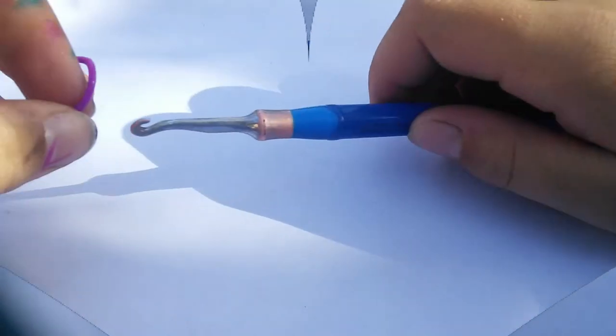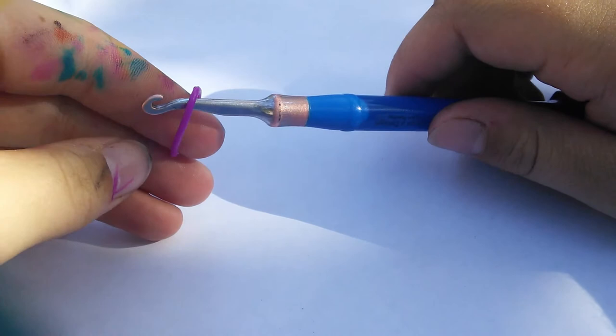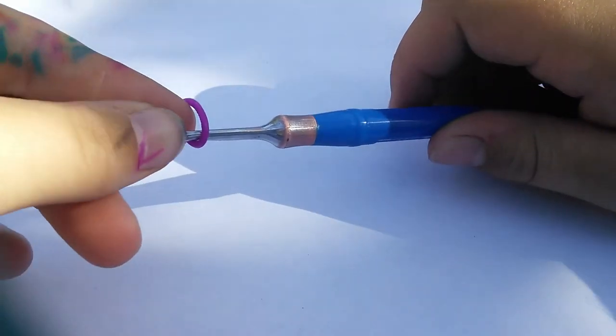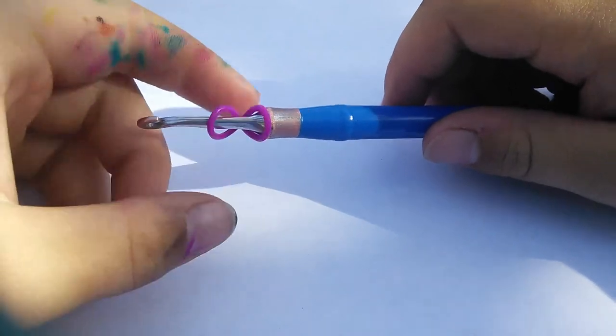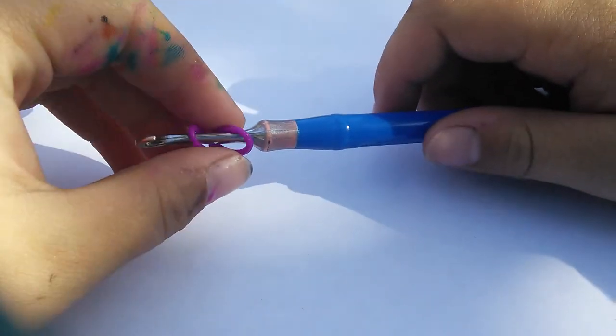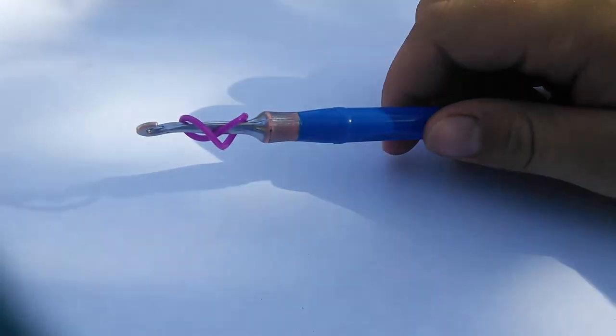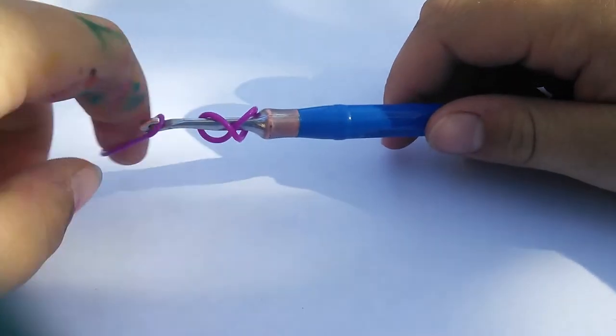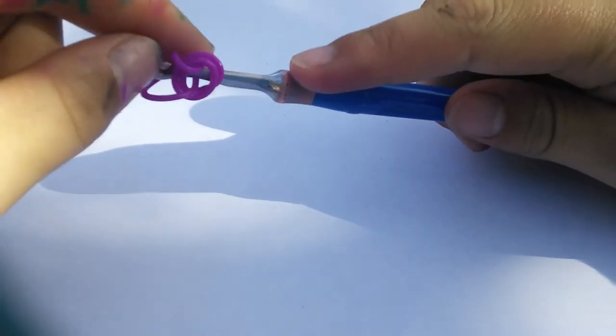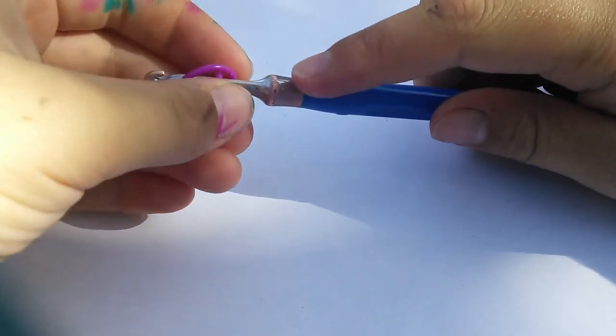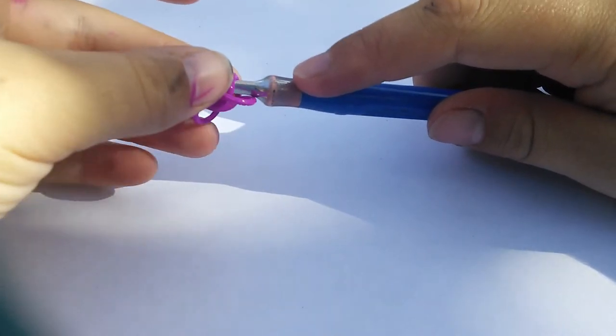You're going to take your hook and grab a band that you're going to be using for the beginning, and loop it around once. If you wanted to use a large C-clip, I guess you could wrap it around more than once, but I'm just wrapping it around once this time. Now you're going to take the same color and just pull it through, and then put both sides back on the hook.